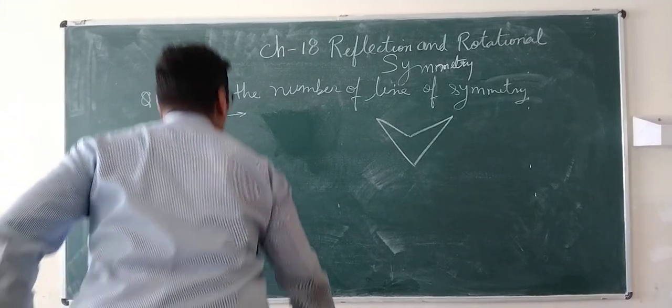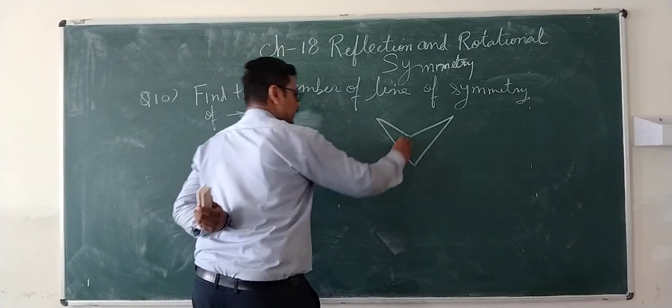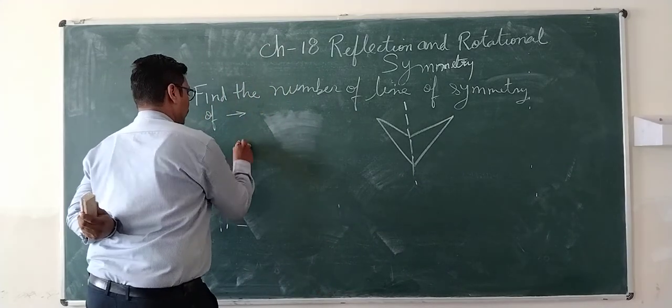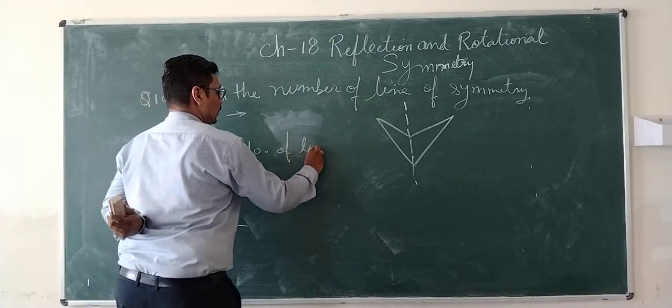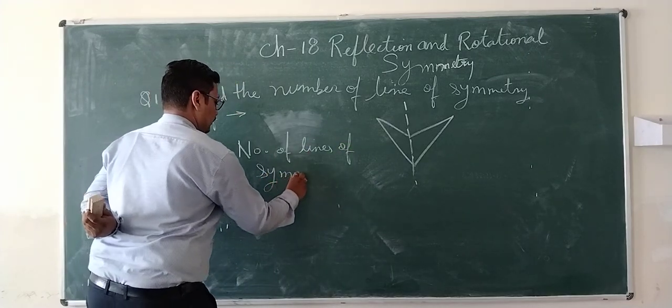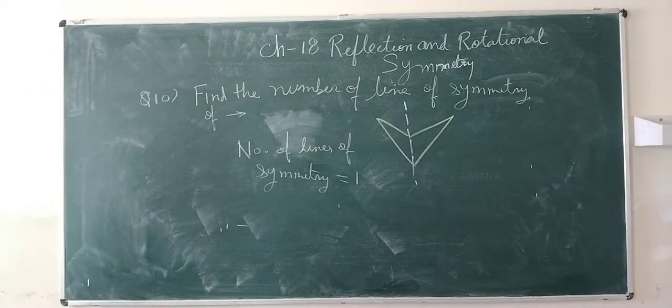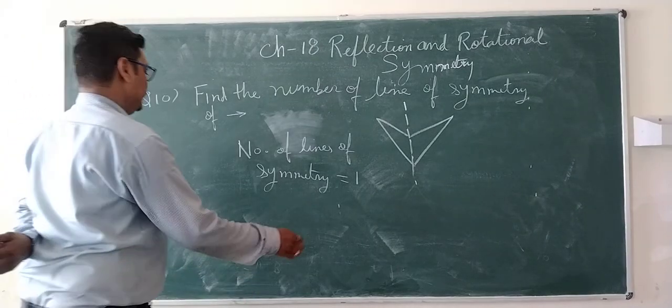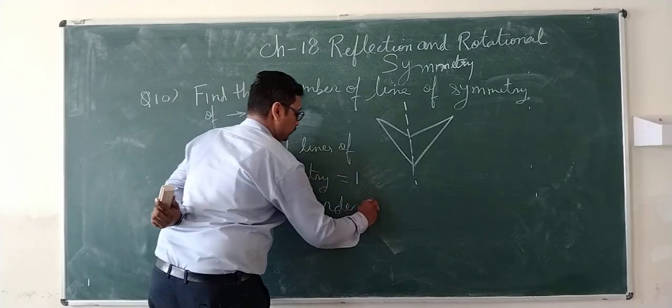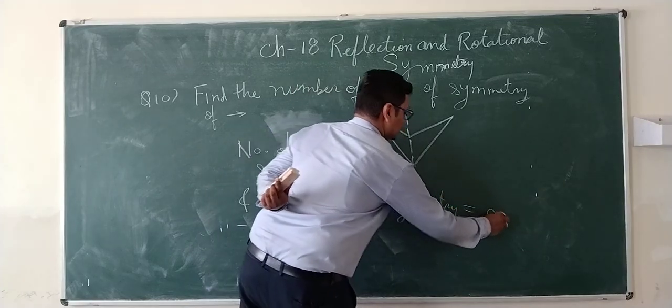Find the number of lines of symmetry for this figure. The line of symmetry for this figure is this one. So the number of lines of symmetry is equal to 1, and its order of symmetry is equal to 0.